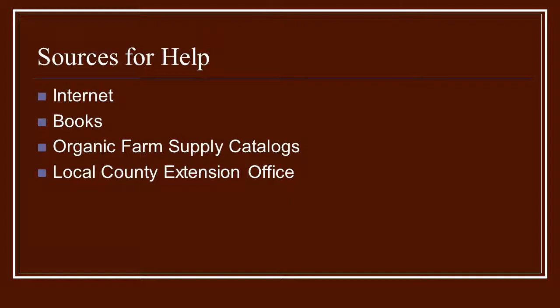There are many resources that can help you find the information you need for pest and disease management. The internet is great — just be very careful that the sites you look at are from a reputable source. Lots of books on organic growing can give you some great methods and techniques we've discussed. Also, organic farm supply catalogs — many of them have whole listings of all the different pests, with pictures of the damage they do, what they look like, and the items that can take care of those problems. Just be sure, once again, that they need to be OMRI listed.